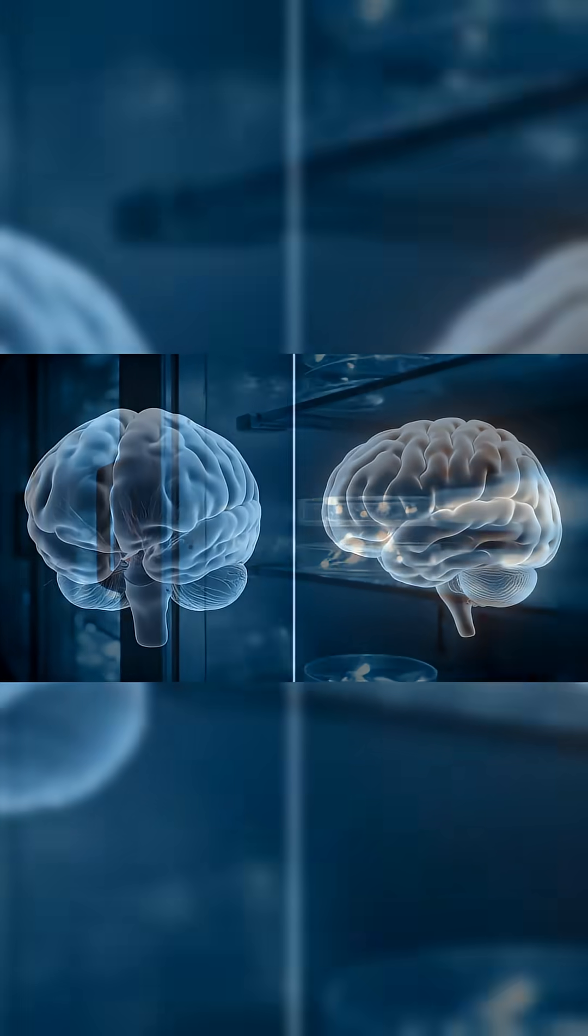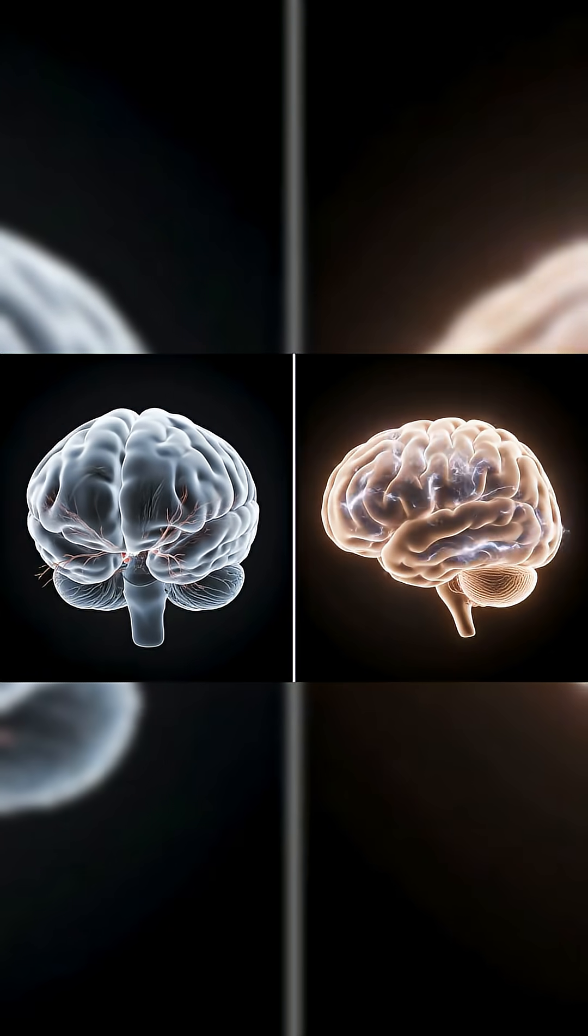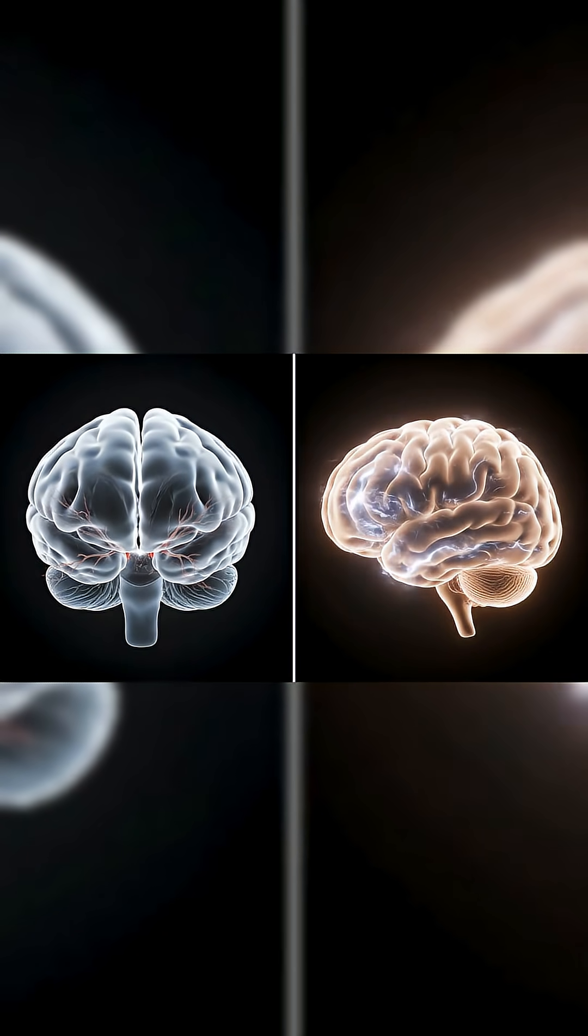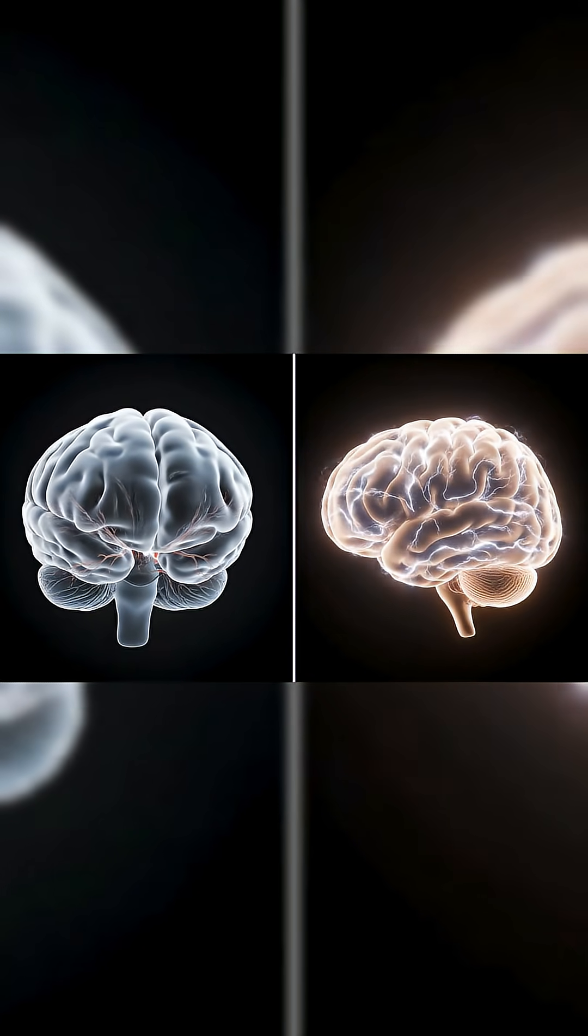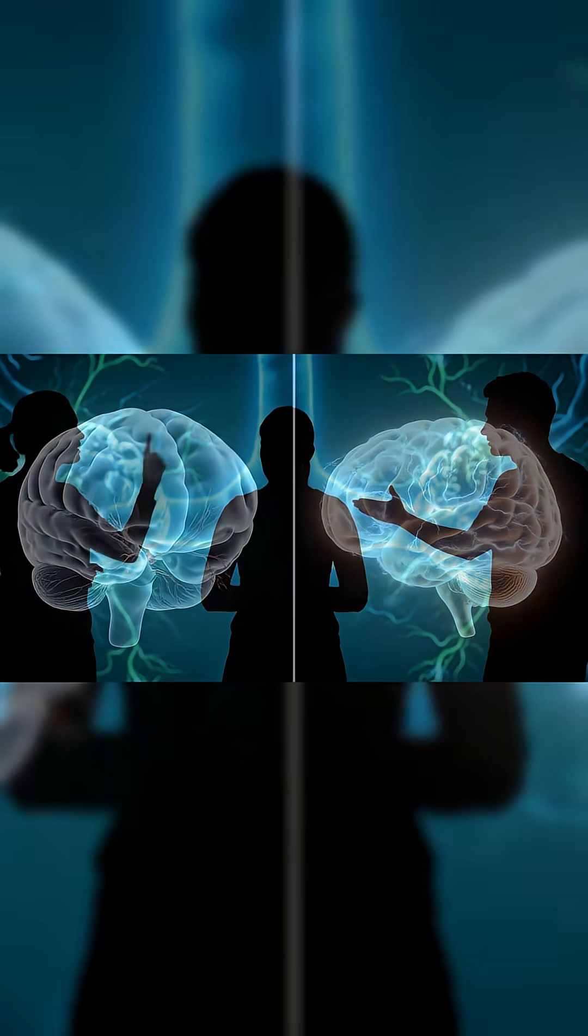If organoids are meant to model the human brain, then excluding consciousness from their potential is hard to justify. After all, consciousness is part of the natural developmental pathway of the real brain.